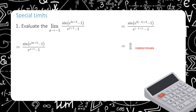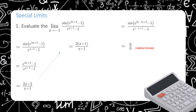We manipulate the equation by factoring the exponent of the numerator. Since the exponent 2x+2 is factorable, we simplify it to 2(x+1). This gives us (e^(2(x+1)) - 1) / (e^(x+1) - 1). We can then cancel the common factor (x+1) in the numerator and denominator, and we get 2. So the answer for this equation is 2.